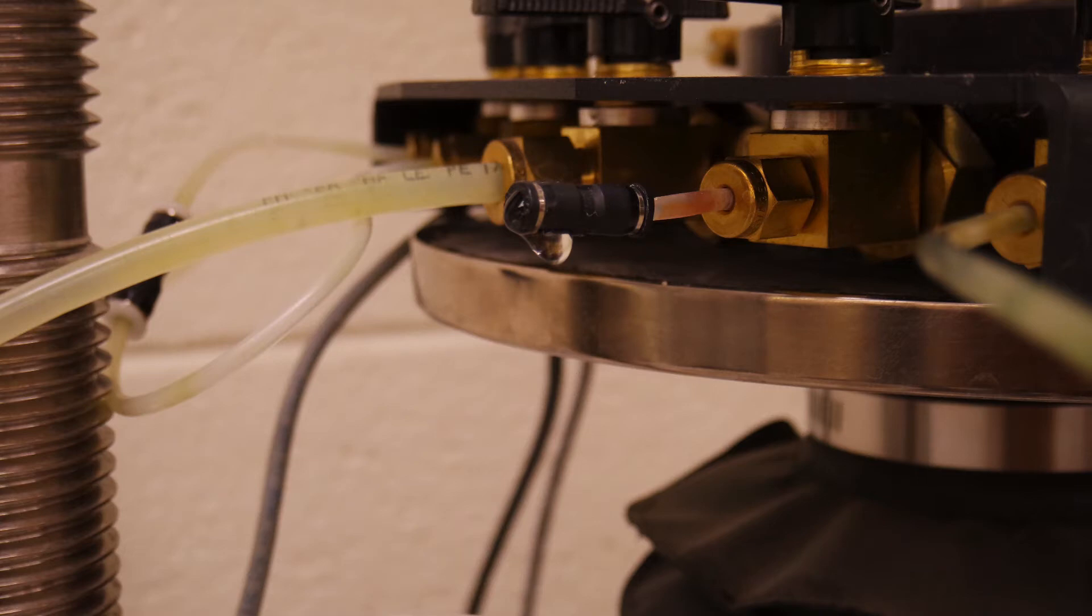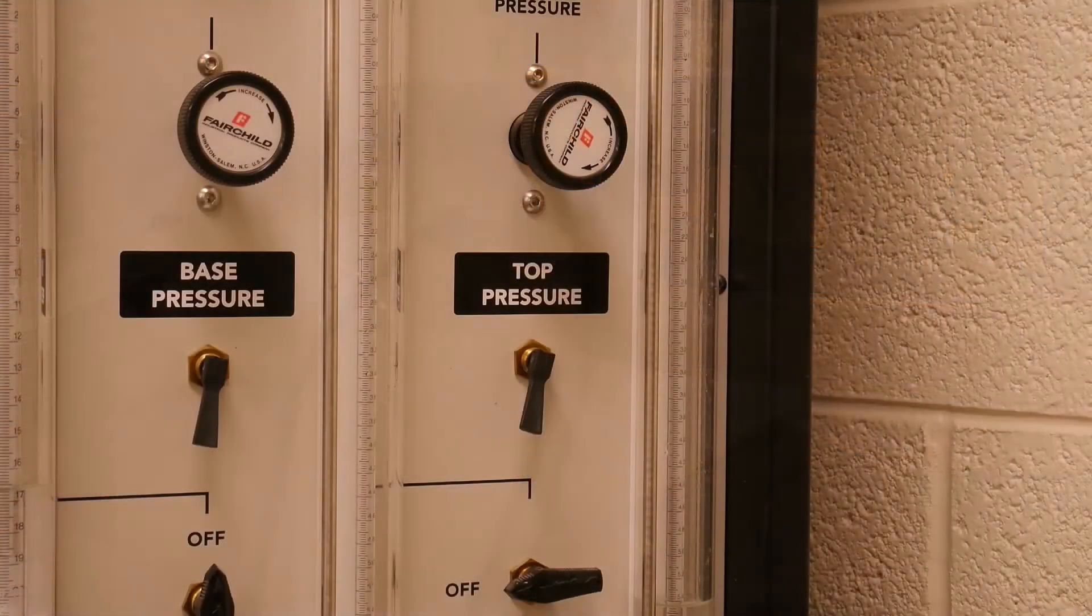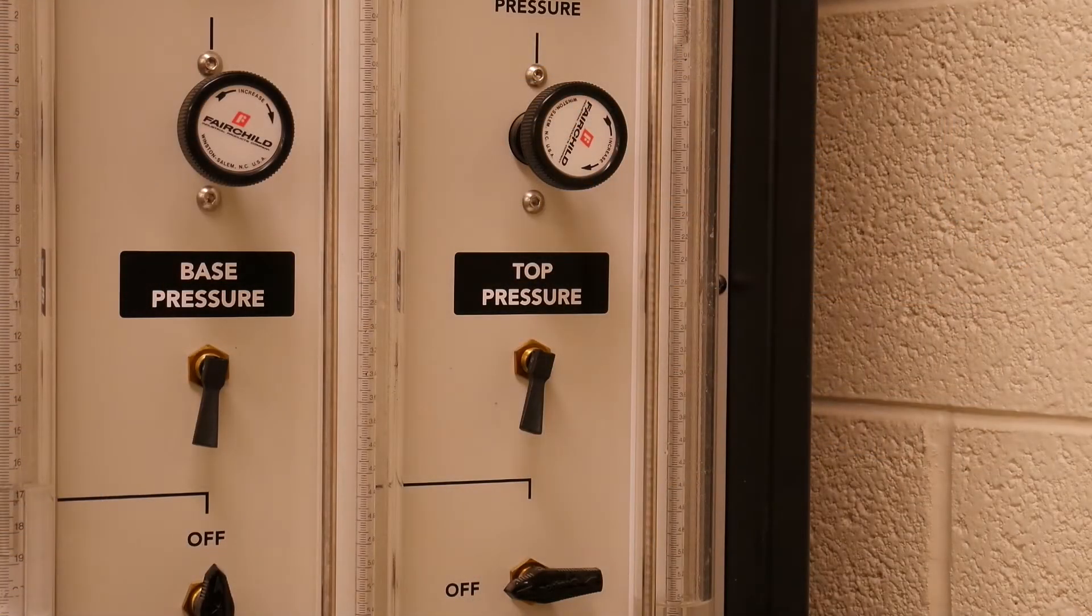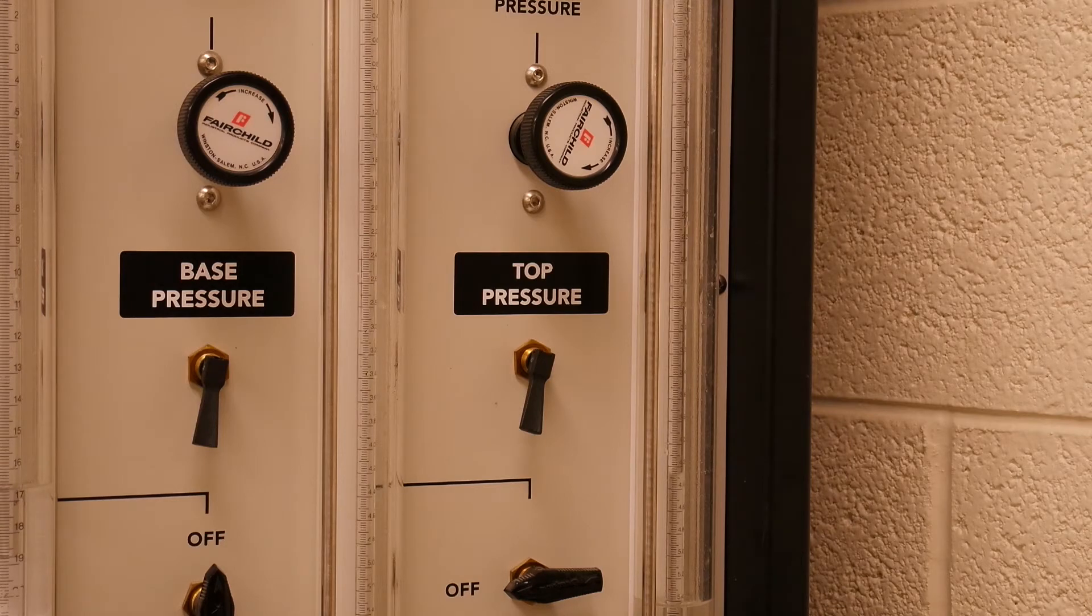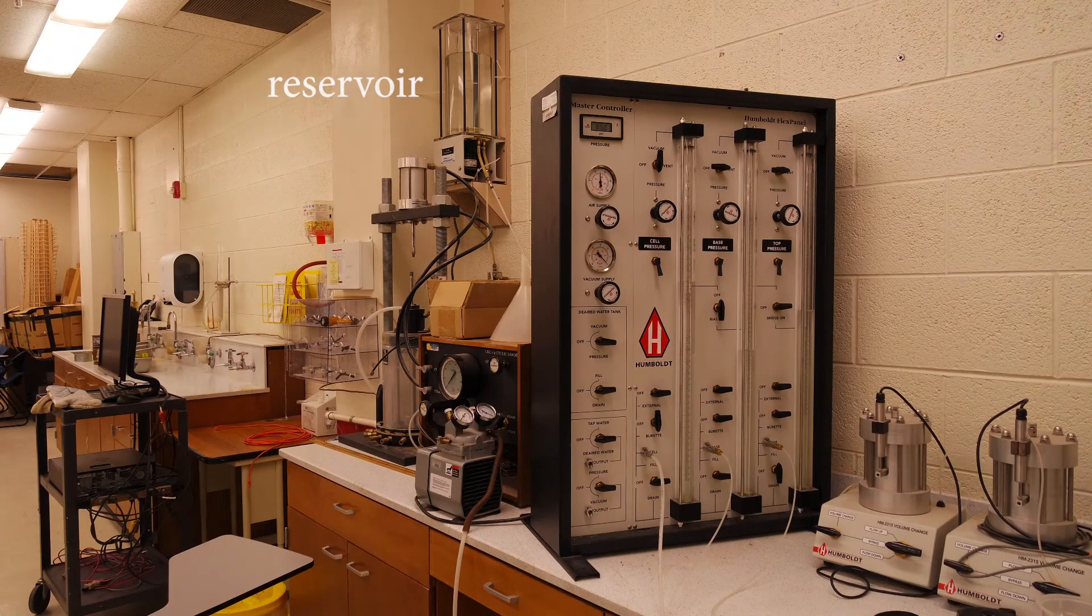We will start the readings at the zero location on the burette and finish at the five milliliter location. You will be given the heights of those locations for your data and time how long it will take to accumulate five milliliters of water. We will repeat this test three times and average the results. Any other information you need on the form will be provided by your TA.